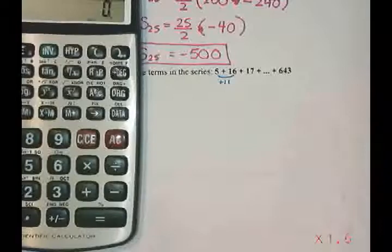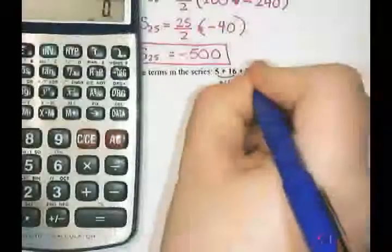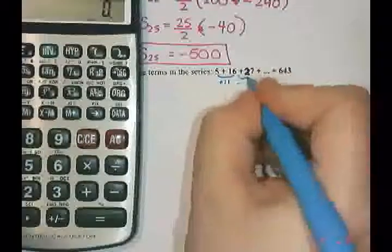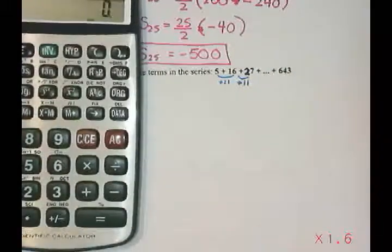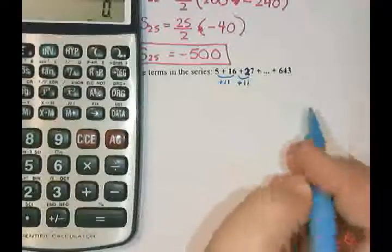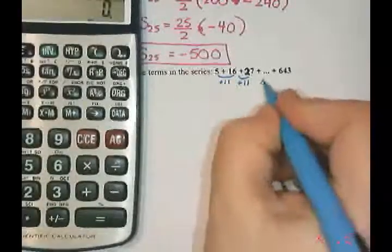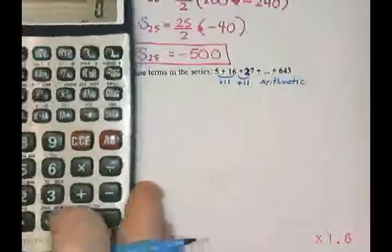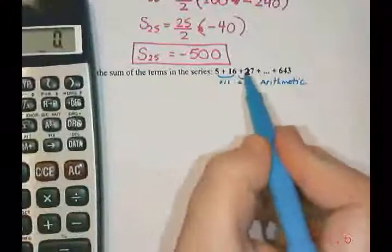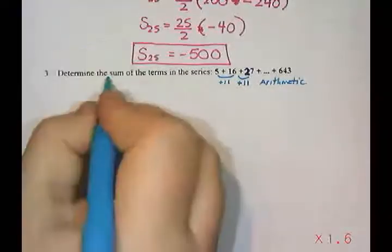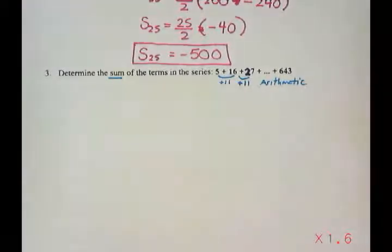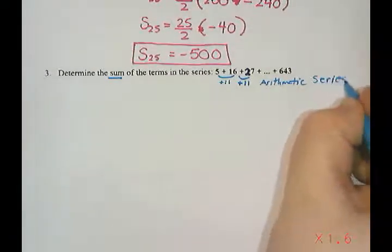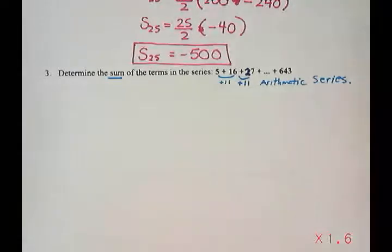And I believe that's supposed to be a 27. I will have to make sure that's fixed on your sheet. 27 take away 16 is also 11. So I see that this has a common difference of 11. So I'm going to say that this is arithmetic. And since I have plus signs in between all of the terms, and it mentions the word sum in the question, I know that this is going to be a series and not a sequence.